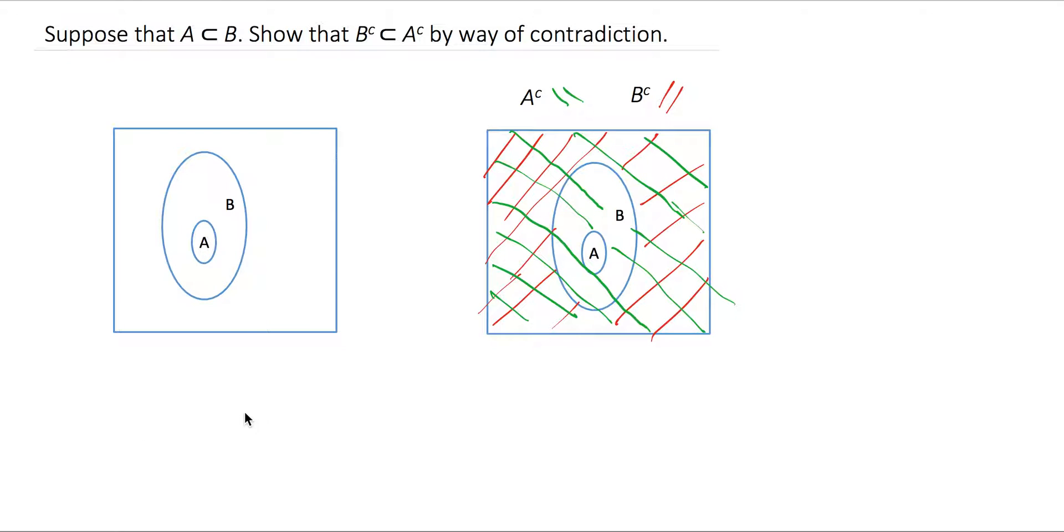What I wanted to do here is quickly set up these Venn diagrams showing the two sides of this. A is in B, so all of the elements of A are also in B because A is a subset of B. This is how this Venn diagram looks.